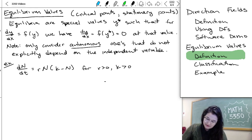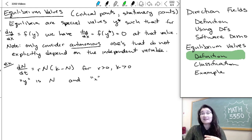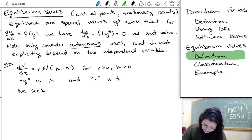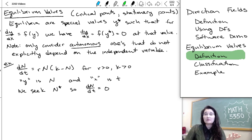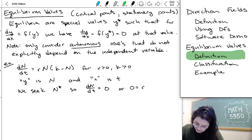And sort of putting everything in the context of the definition up above. In this case, the y is n and the x that we're not seeing on the right hand side is t. And to find the equilibrium values, we want that derivative dn/dt equal to 0 or 0 is equal to that rn times (k minus n) at the special n stars that are the equilibrium.